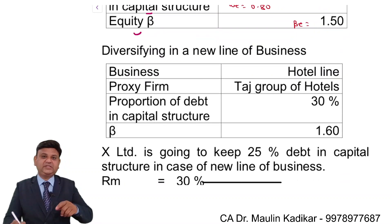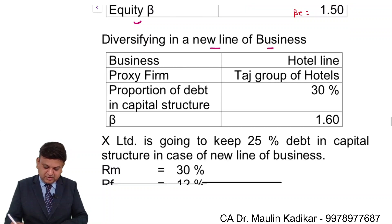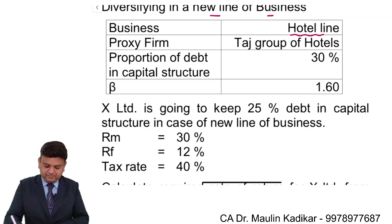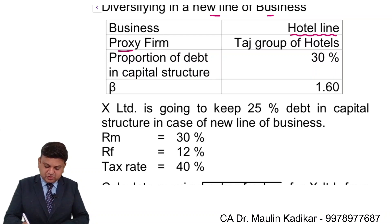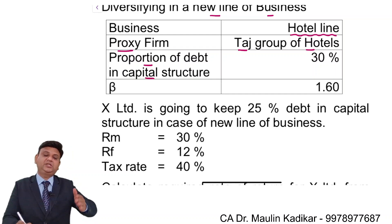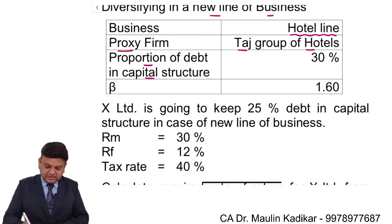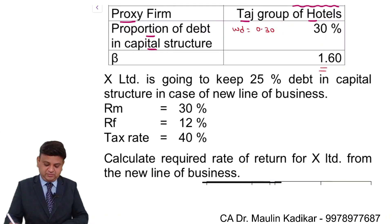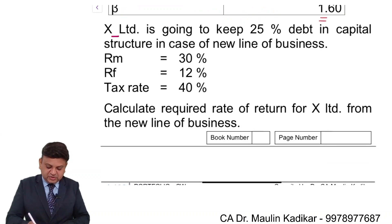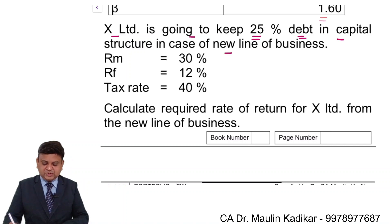Now this company is diversifying into a new line of business — the hotel line. The proxy firm, that is a company doing similar business to what we are diversifying into, is Targe Group of Hotels. The proportion of debt financing in the capital structure of Targe Group of Hotels is 0.30, and its beta is given as 1.60. X Limited is going to keep 25% debt in the capital structure in case of the new line of business.